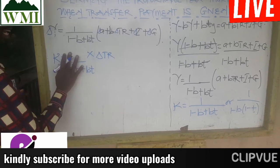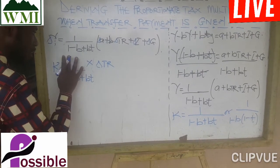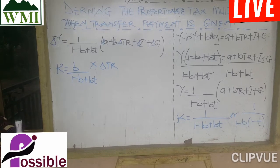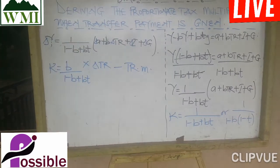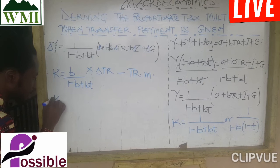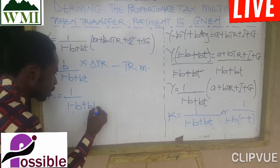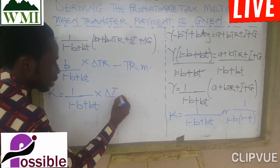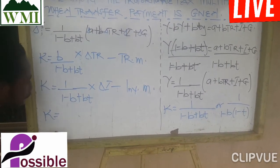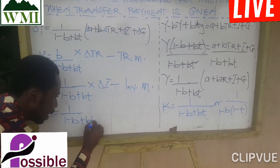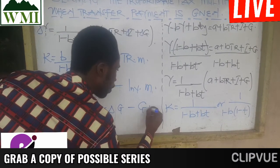The investment multiplier is 1 over (1 minus B plus BT) times the change in investment. The government spending multiplier is 1 over (1 minus B plus BT) times the change in government spending.